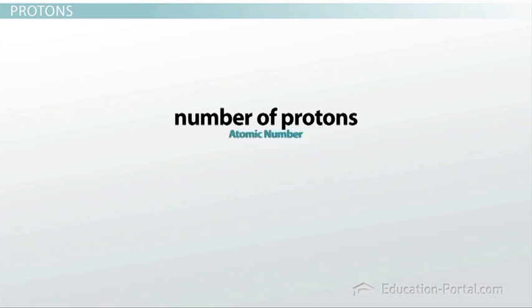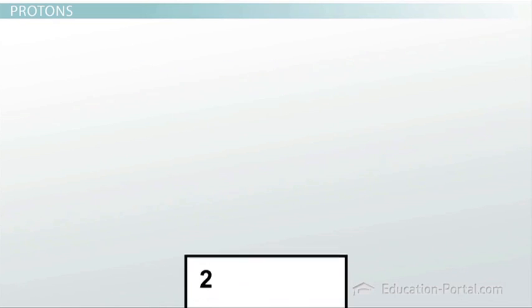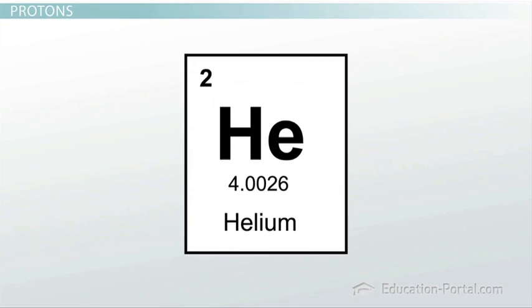The number of protons is called the atomic number, and it is really special because it gives the atom its identity. Keep in mind that not all periodic tables are exactly the same, so some may have the atomic number for each element in a different location. Another interesting feature of the proton is that it carries an electrical charge of plus 1. Just remember that it has a charge of positive 1.